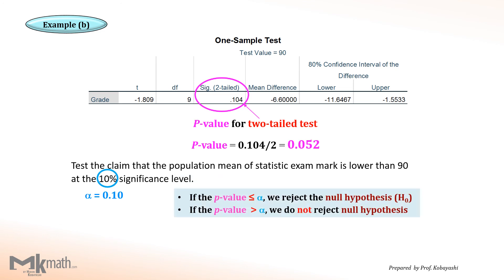This is a criterion to make a decision. If p-value is less than or equal to alpha, we reject the null. If p-value is greater than alpha, then we do not reject. Our case, p-value is 0.052. Alpha value is 0.10. p-value is less than alpha value. We reject the null hypothesis, H0.